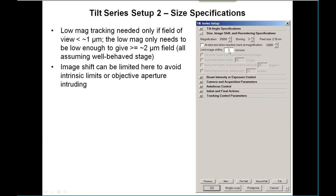This is the place to limit the image shift that the program will allow during the tilt series. This is needed if you have intrinsic limits on the image shift or if the objective aperture intrudes at a certain point.